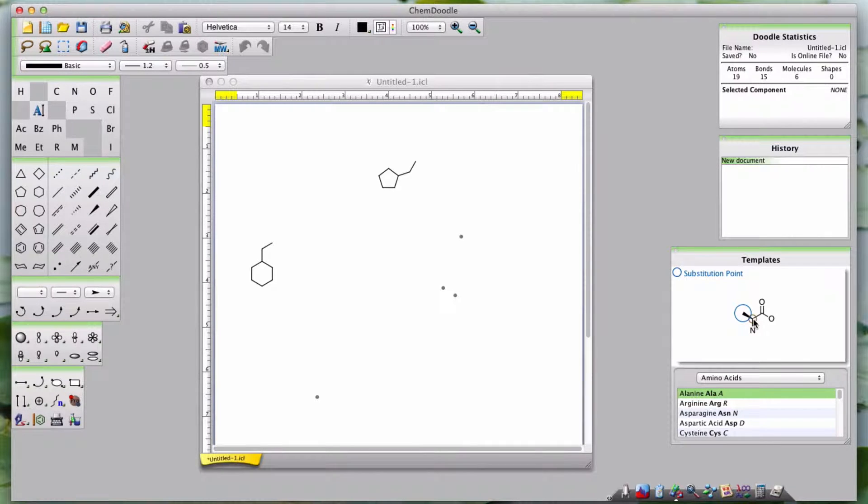The Substitution Point indicates the atom that will be overlapped with the atom the template is connected to. This means that you must click on the Substitution Point you desire and then click on the atom within the doodle area that you want it to overlap with.